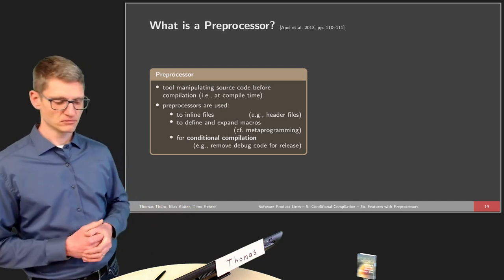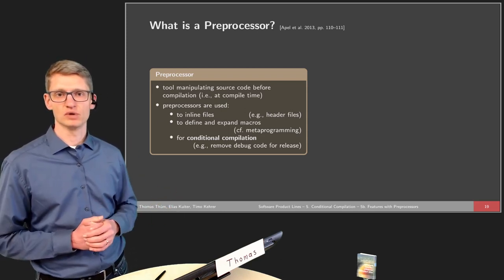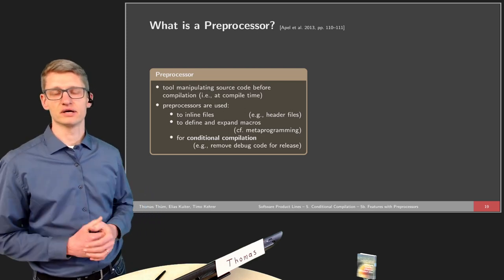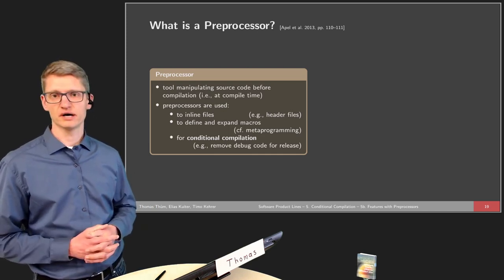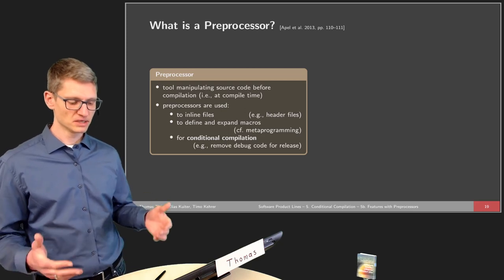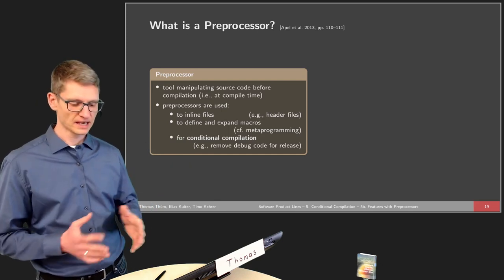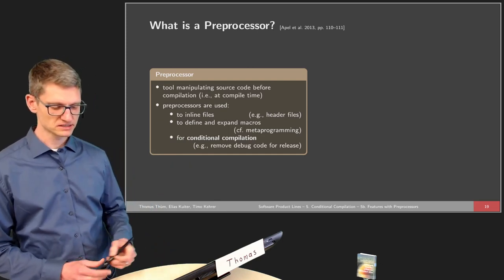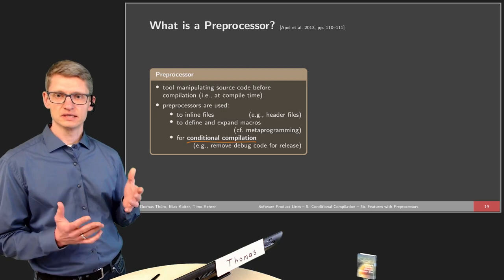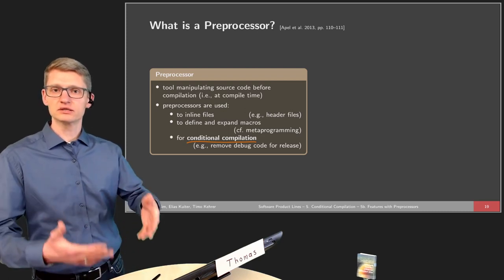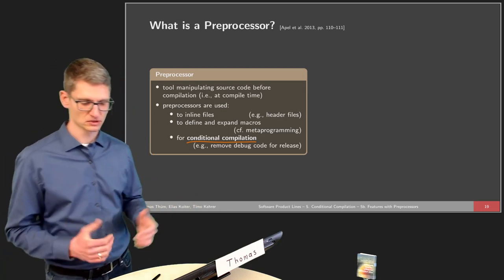Preprocessors have several different use cases. They are used to inline files — in the C world we have header files that are included in C files. They can define and expand macros, enabling meta-programming where functions manipulate source code before compilation. And they can be used for conditional compilation — the title of this lecture — where parts of the source code are included or not depending on flags given to the preprocessor.